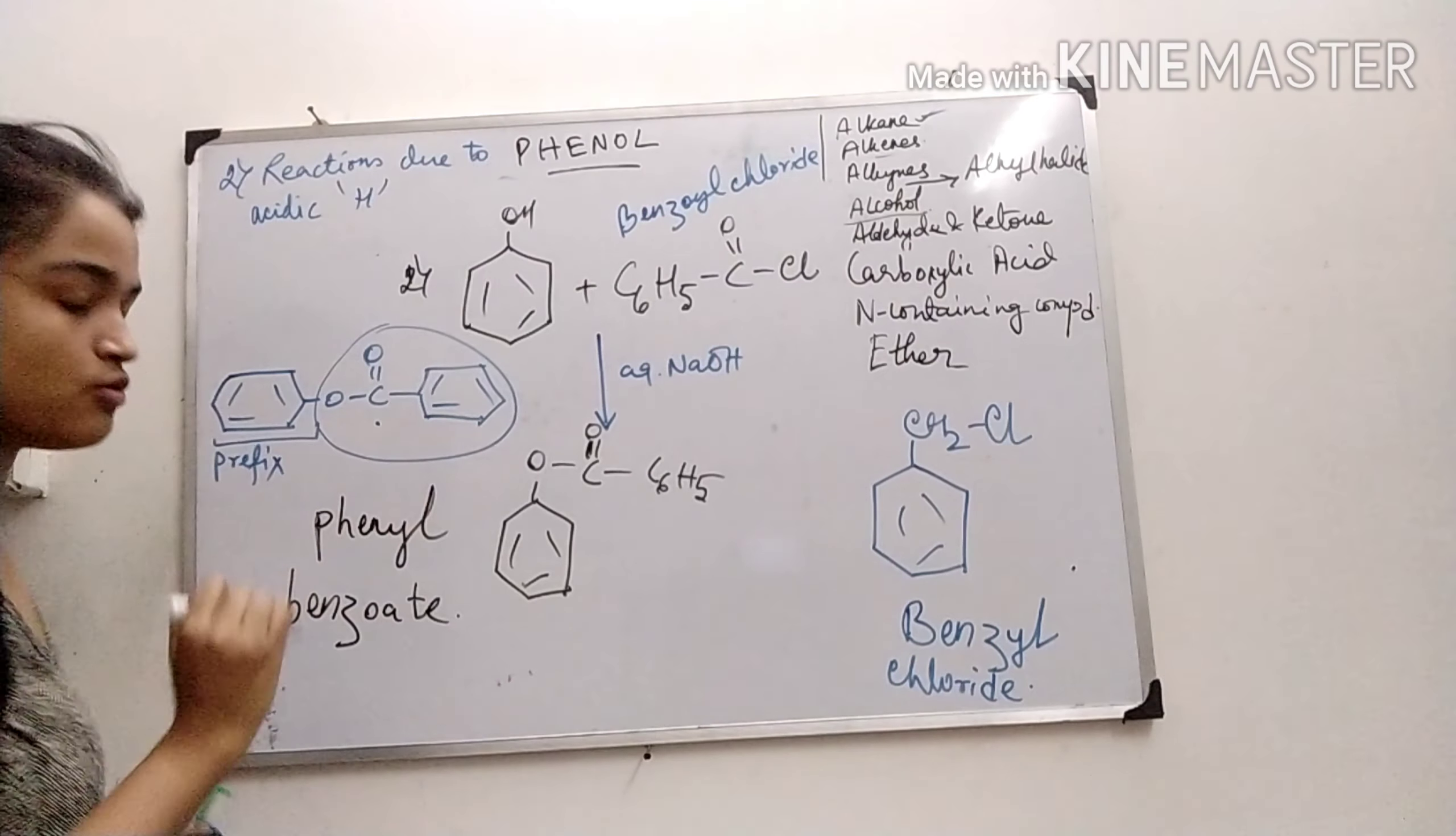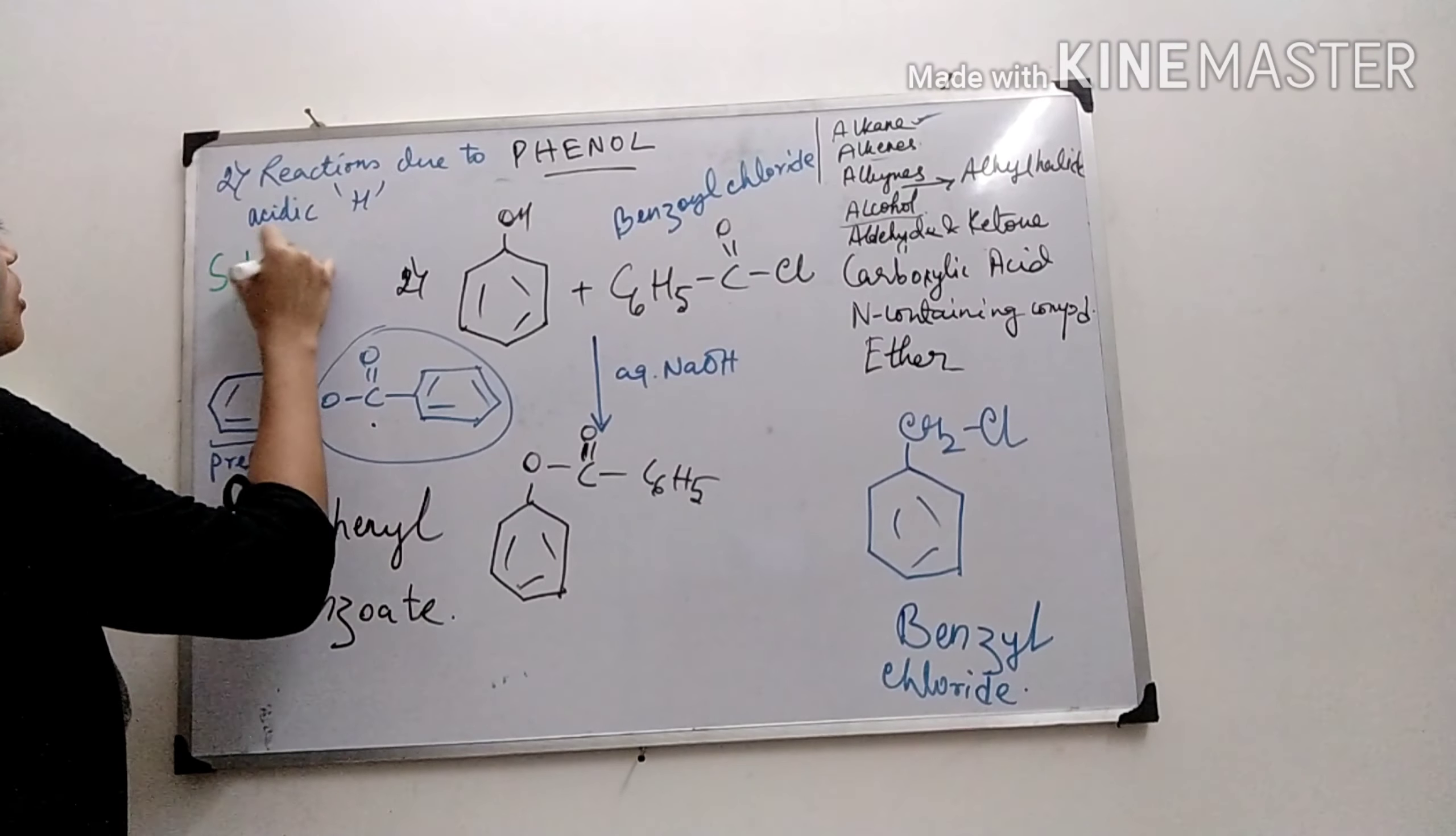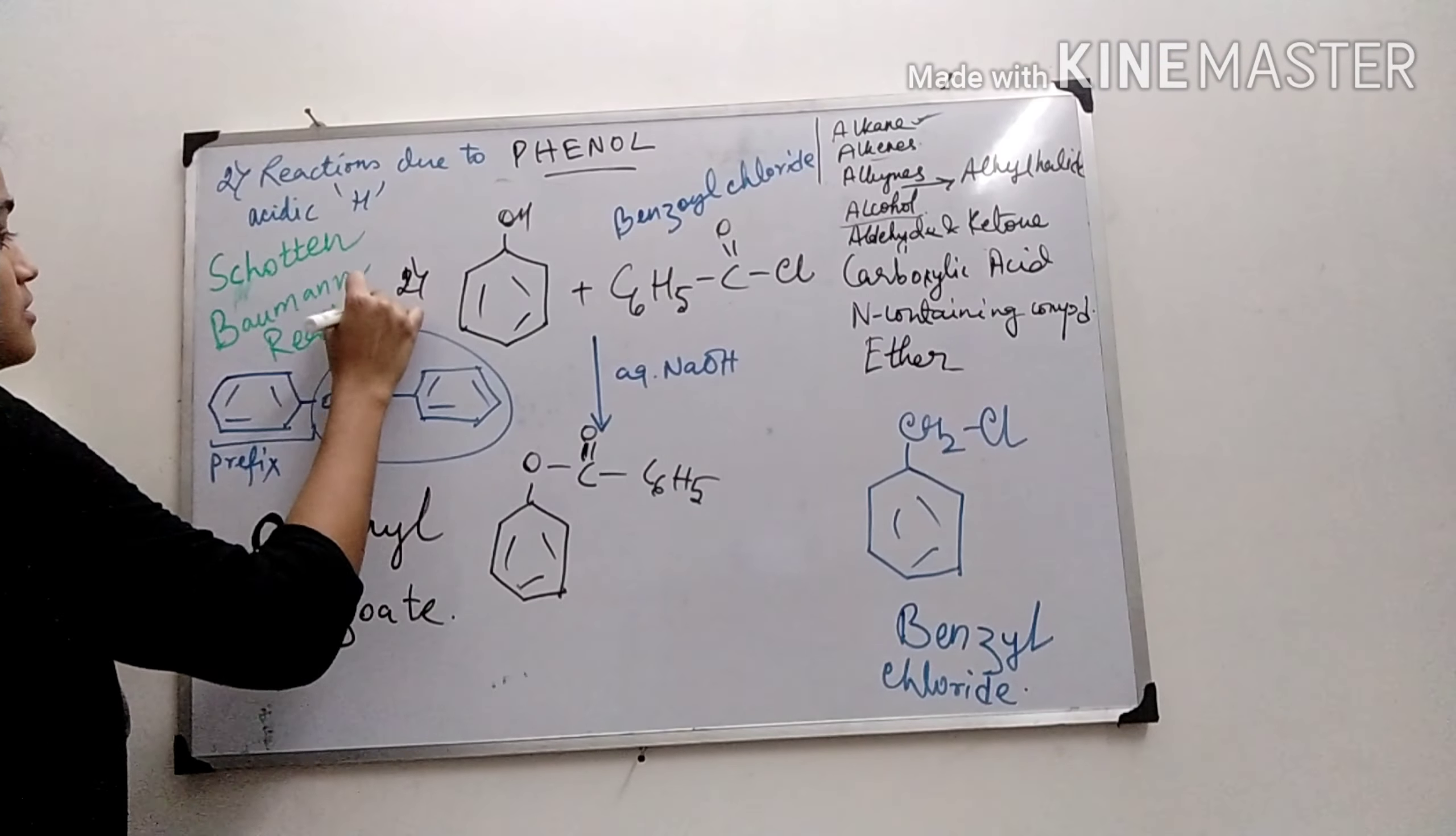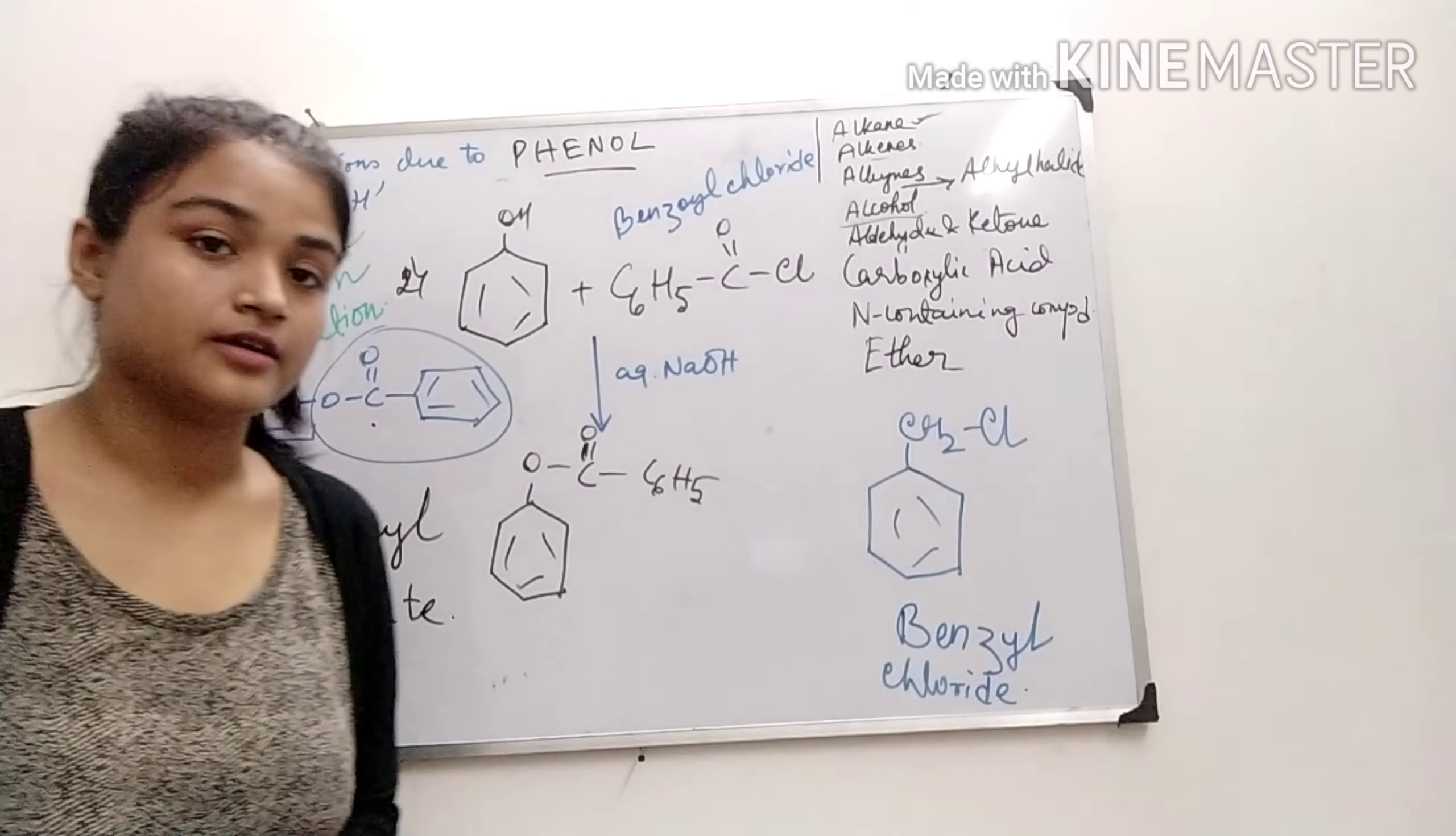This reaction is a named reaction, and the name of this reaction is Schoten-Baumann reaction, where phenol undergoes benzoylation. The last one was acylation, where an acyl group was added. Here, a benzoyl group is added.